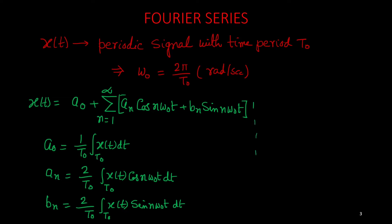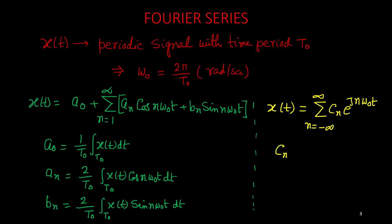This is the trigonometric form with respect to sinusoidal signals. We can also have the expression for x(t) in exponential form. In exponential form, x(t) can be written as a summation of cn·e^(jnω0t), where n goes from minus infinity to plus infinity. And this cn we can compute as (1/T0) times the integral of x(t)·e^(-jnω0t) dt over one time period.